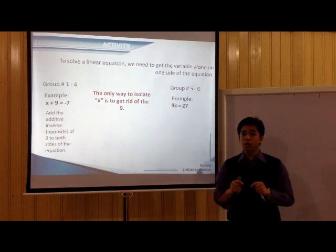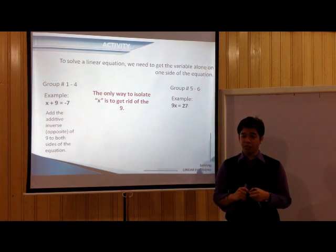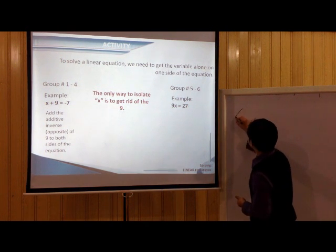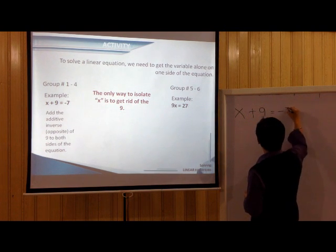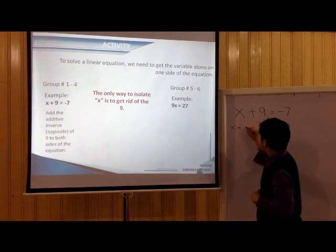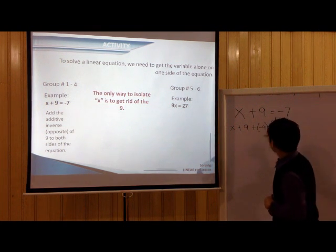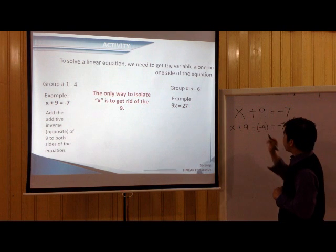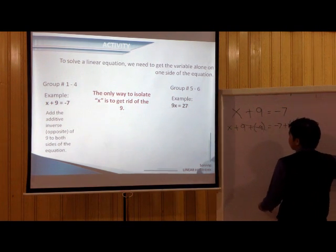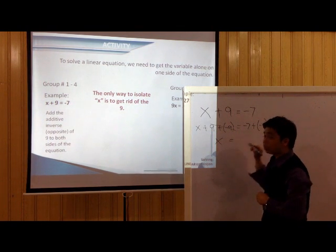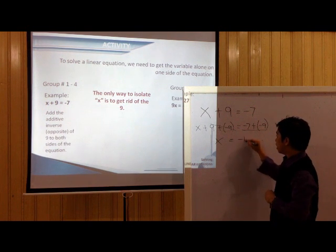The only way to cancel positive 9, or to get rid of that positive 9, is to add the additive inverse of positive 9 to the left side and to the right side as well. Remember that the additive inverse of positive 9 is negative 9. So I just have to add negative 9 to the left side, and also negative 9 to the right side. 9 plus negative 9 will cancel out, of course. So I will be left with X, which is equal to the sum of negative 7 and negative 9, which is negative 16.